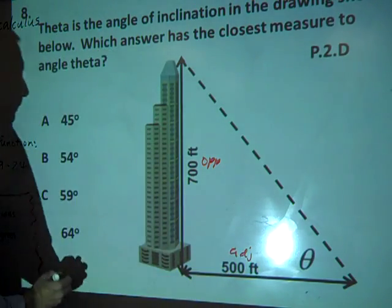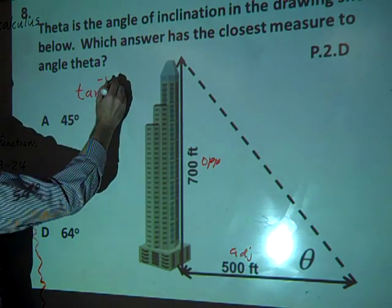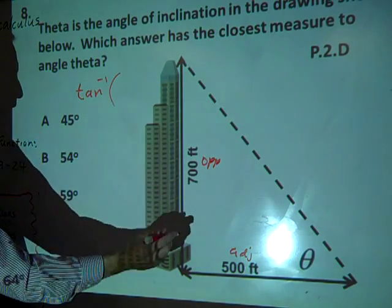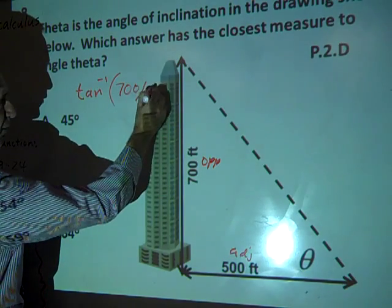Right. So we can solve this as tangent inverse of our opposite, which is 700, over adjacent, which is 500.